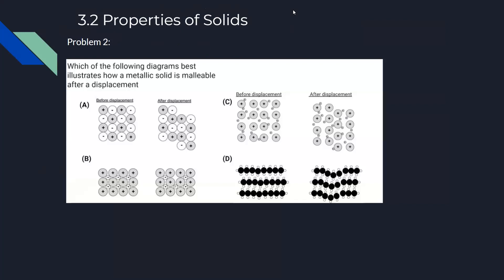A second problem asks which diagram best illustrates how a metallic solid is malleable after displacement. A metallic solid contains only cations — no anions — so option A is eliminated. Option B doesn't show displacement. Option C shows the cations in a regular arrangement before impact and shifted after, which correctly illustrates malleability. Option D is incorrect. The answer is C.